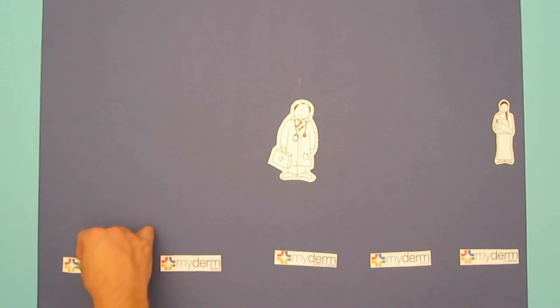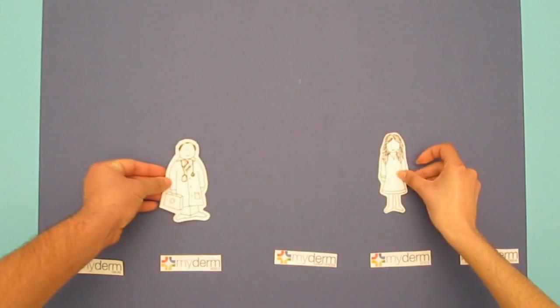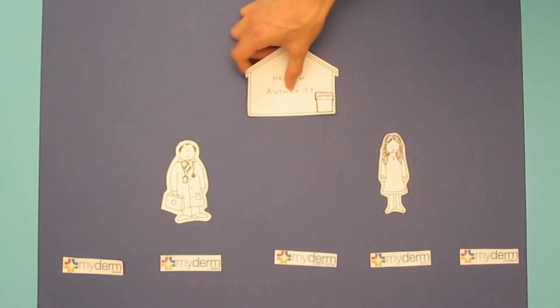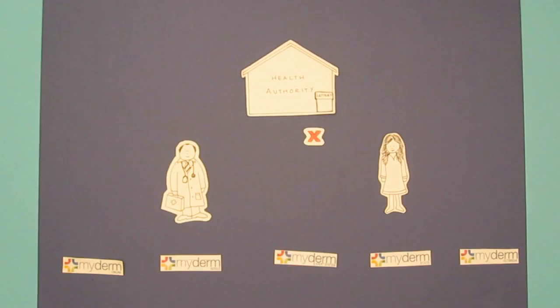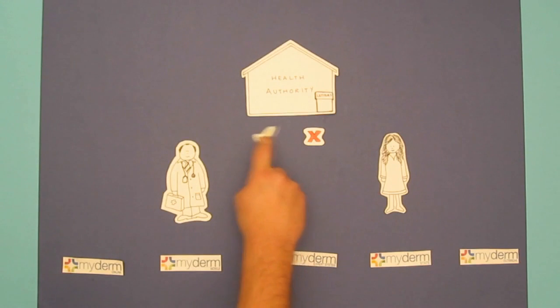But how do you know that Dr. John and Sophia are indeed who they say they are? MyDerm communicates registration of users with the country's health authority, who can either accept or decline their application.